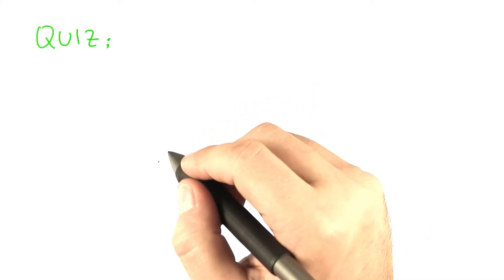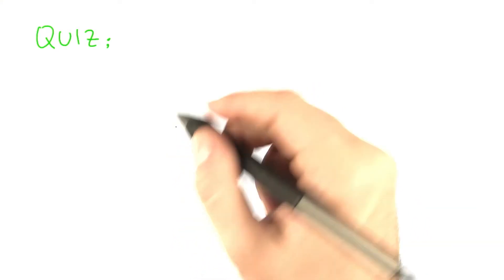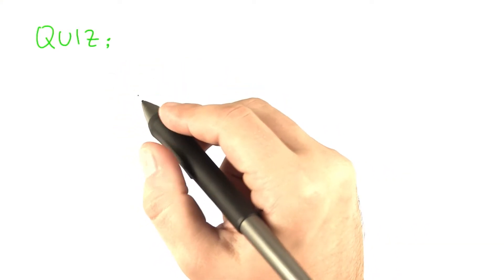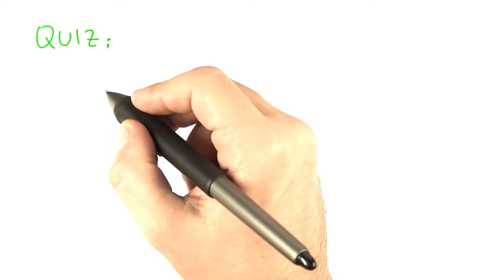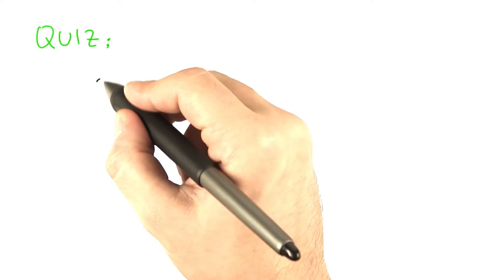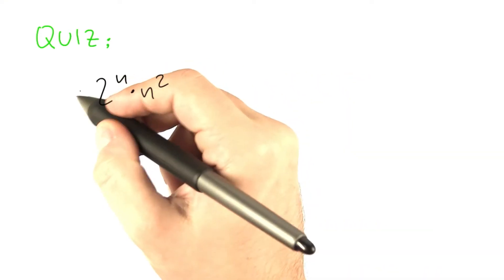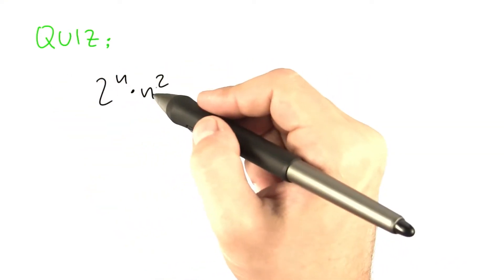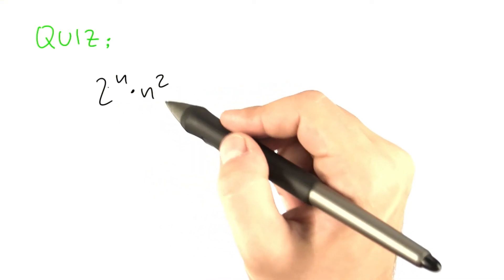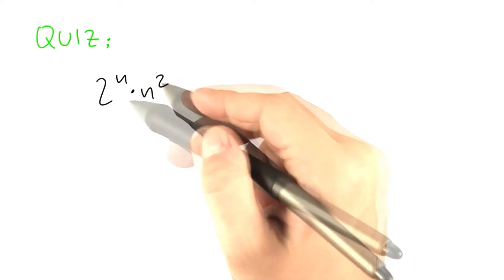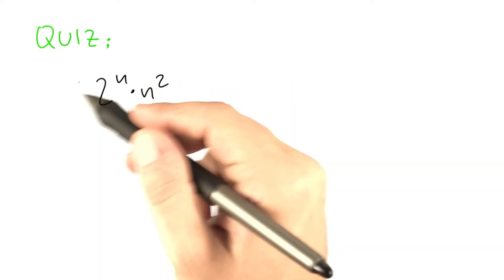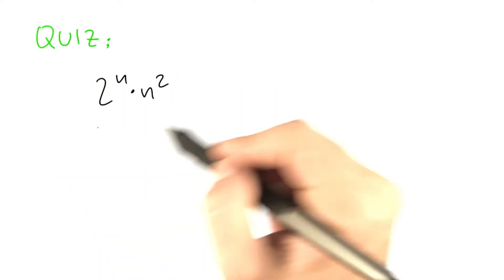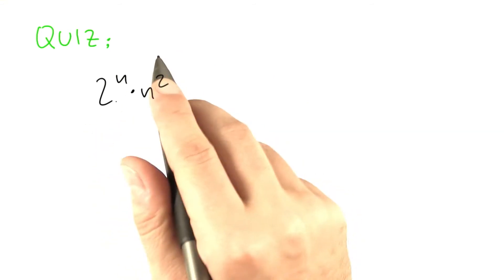We are going to kick this off with a little quiz. Let's assume that we have an algorithm with a running time of 2 to the power of n times n squared. Not O of 2 to the power of n times n squared, but really 2 to the power of n times n squared. You can add any constant you want if that makes you happy, but that's not the point of this quiz.